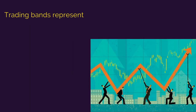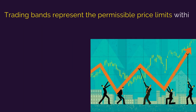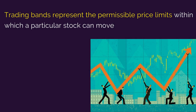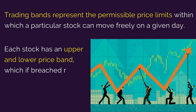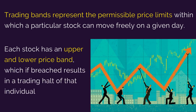Trading bands represent the permissible price limits within which a particular stock can move freely on a given day. Each stock has an upper and lower price band which, if breached, results in a trading halt of that individual stock and not the whole market.